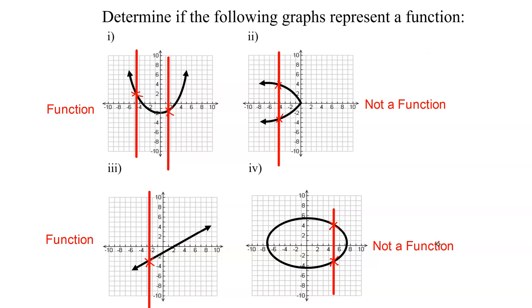Notice in example two and example four, I could have drawn a whole lot of vertical lines that didn't cross the graph at all, here and here. That doesn't matter. All it takes is one vertical line that crosses the graph more than once, and it is not a function.